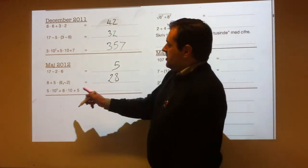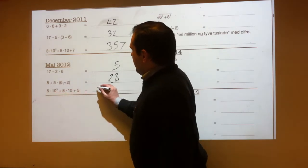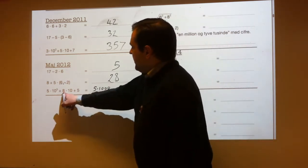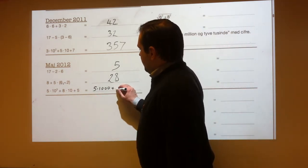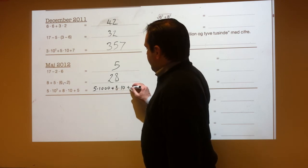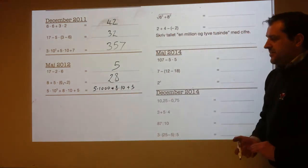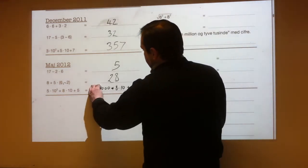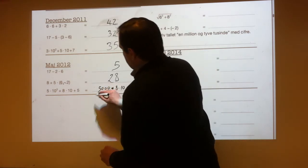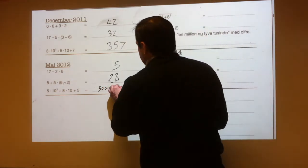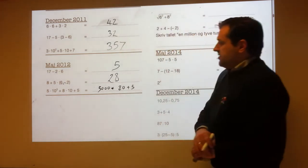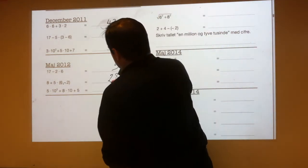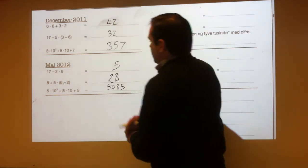Here's another one with powers. 5 times 10 to the 3 is the same as 5 times 1,000. So 5 times 1,000 plus 8 times 10 plus 5. Do all the multiplications: 5 times 1,000 is 5,000, and 8 times 10 is 80. So that's the same as 5,000 plus 80 plus 5, which is 5,085.